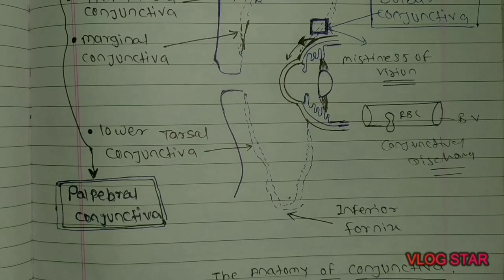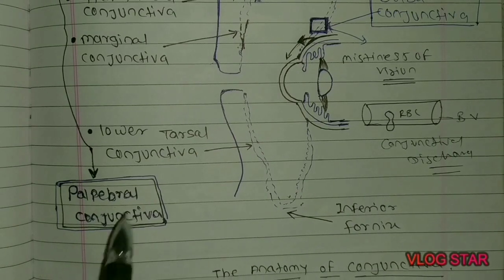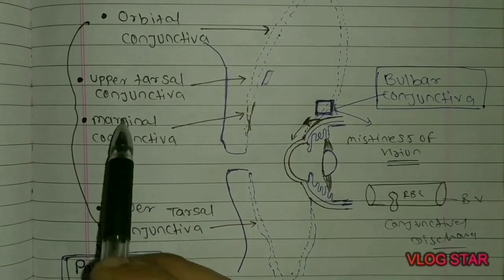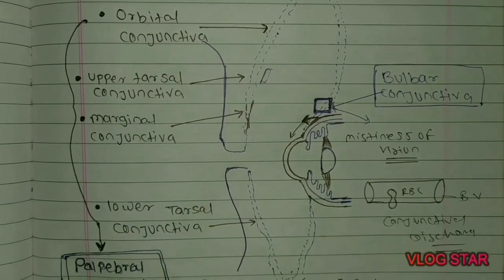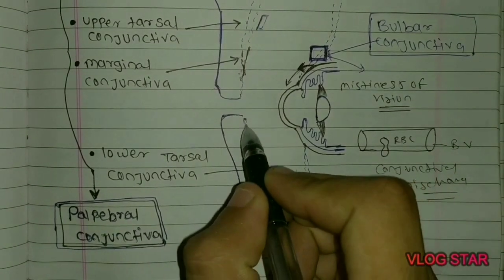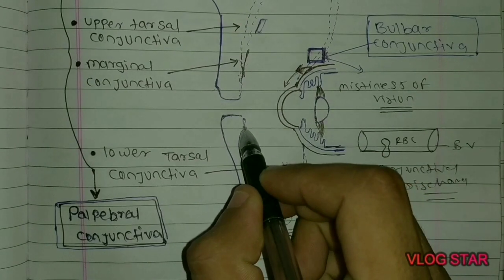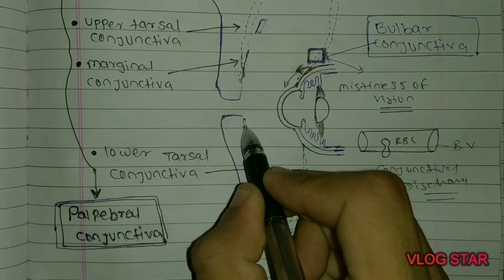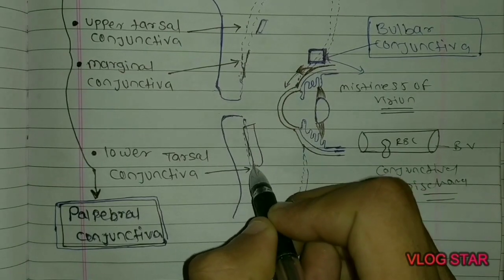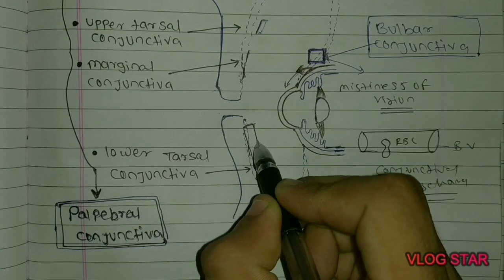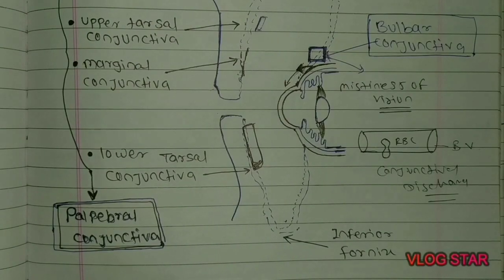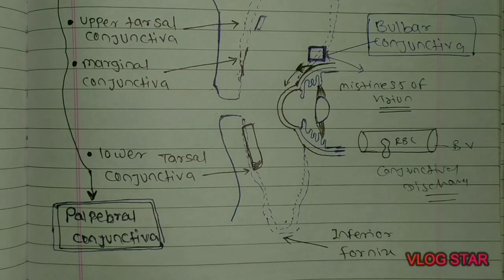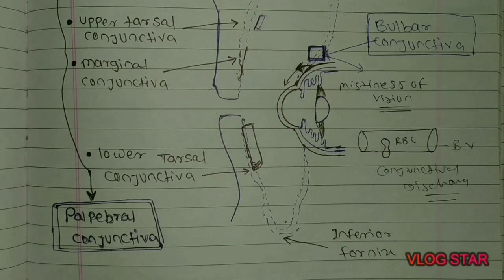Let's go towards the classical concept of pathogenesis of Membranous Conjunctivitis. The palpebral conjunctiva consists of three parts: marginal conjunctiva, upper tarsal and lower tarsal conjunctiva, and orbital conjunctiva. The membrane gets formed on the inner lid margin of the palpebral conjunctiva.